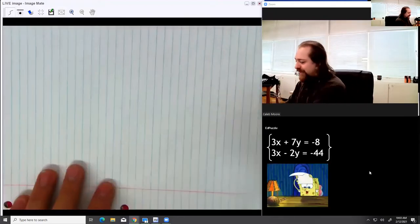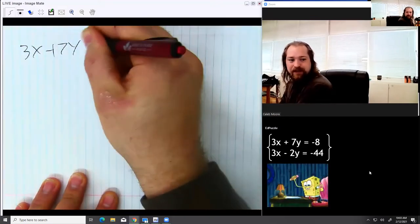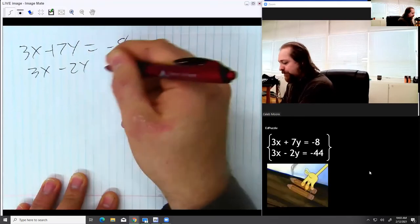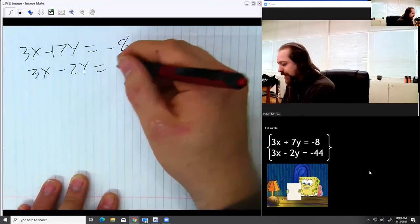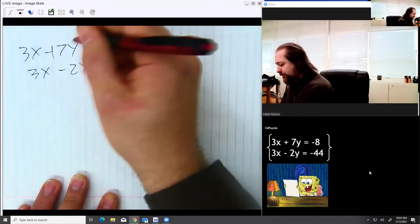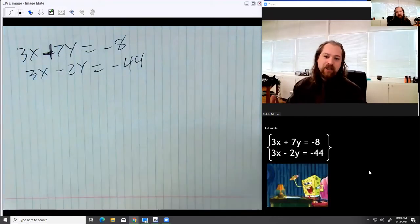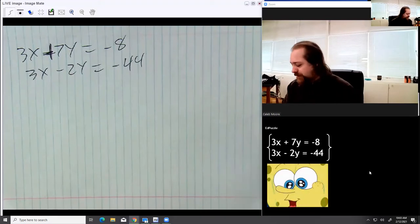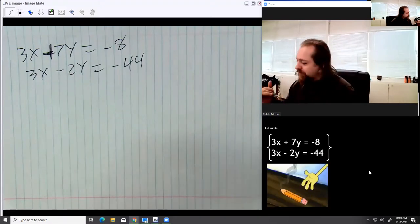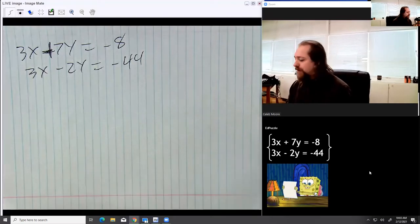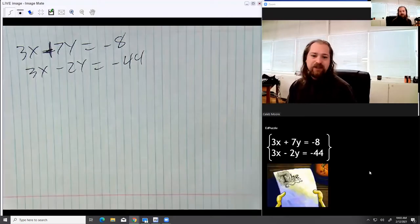And we're looking at 3x plus 7y equals negative 8, and 3x minus 2y equals negative 44. Okay, so of course, what's the first step? Well, I sure would love to cancel these out. But if you remember from yesterday's example with the burgers and french fries, those 3x's make 6. They don't cancel out.